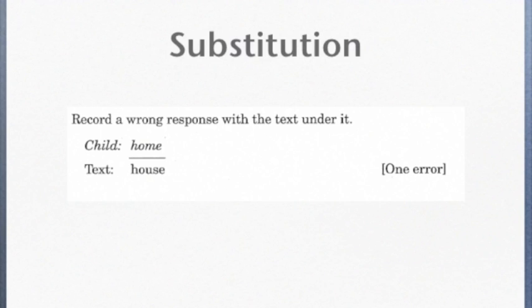The most common error students make is a substitution. A substitution is when a student reads an inaccurate word in place of the word in the text. For a substitution, you record what the child says above the line and record what the text actually says below the line. For example, if the child says home instead of house, it would be recorded like you see on the screen. Each substitution is counted as one error.